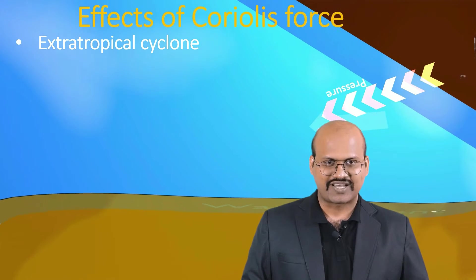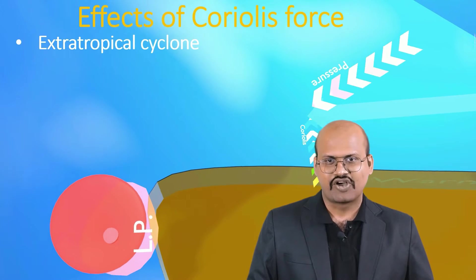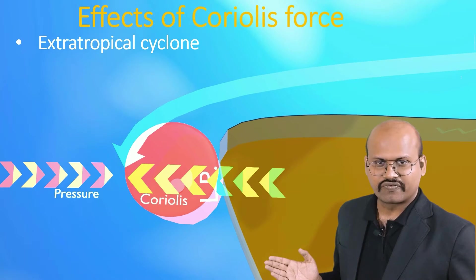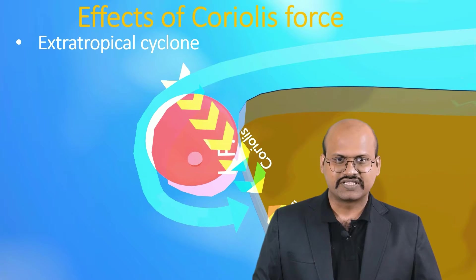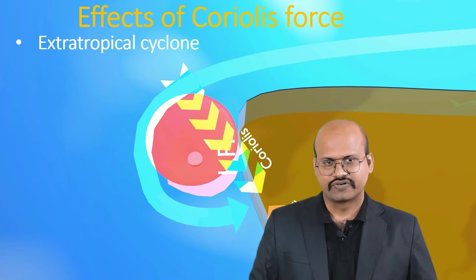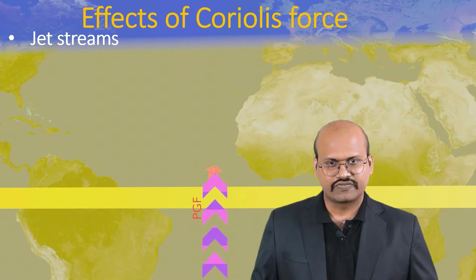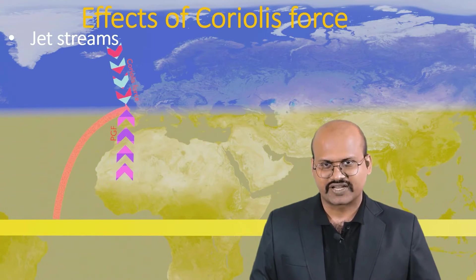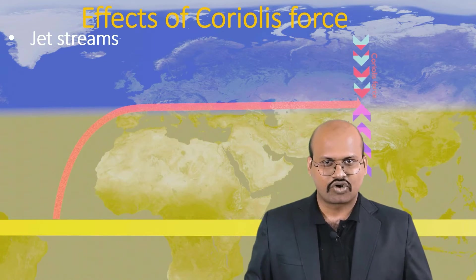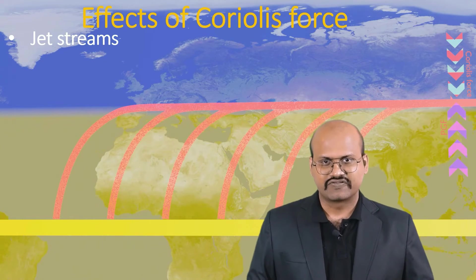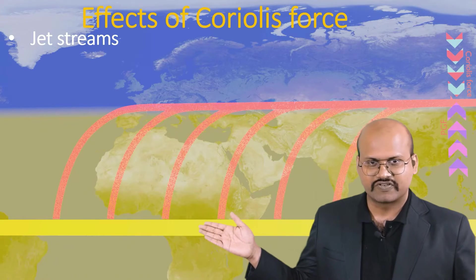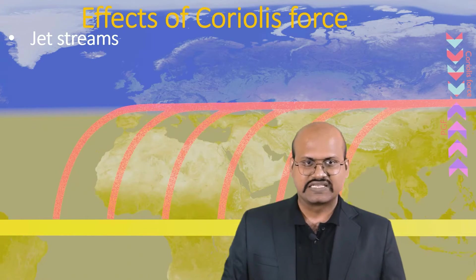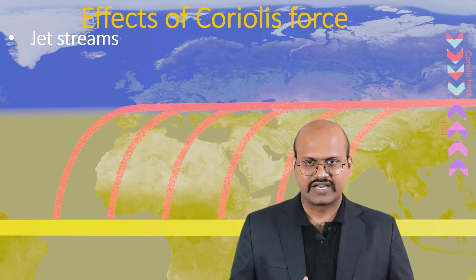In extra-tropical cyclones, the cold air that tries to move towards the low pressure area gets deflected by the Coriolis force and comes to the boundary of cold and warm air, forming a cold front. So even in extra-tropical cyclones, wind direction is deflected with the help of Coriolis force. Coriolis force also plays a major role in forming jet streams: the wind system starting from the equator moves northward due to pressure gradient, but as it continues north the increasing Coriolis force deflects it to the right, creating the high-speed wind belt we call the jet stream.